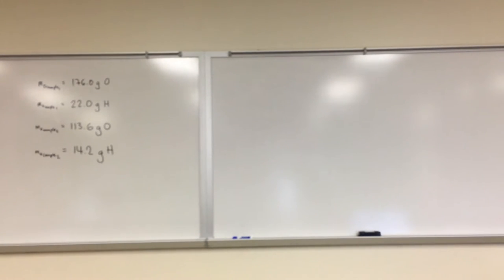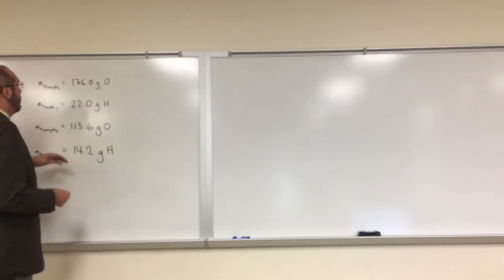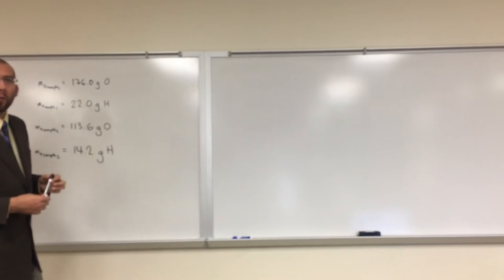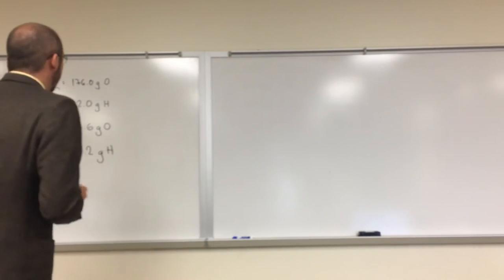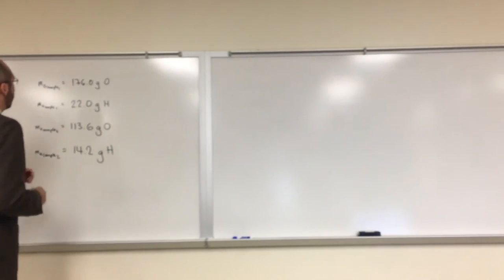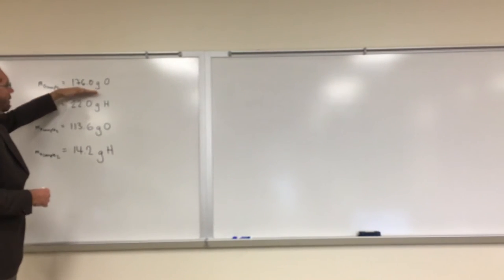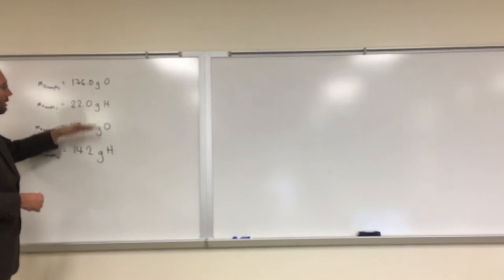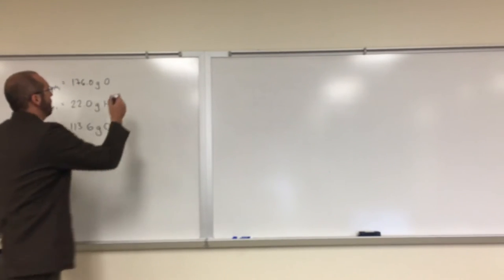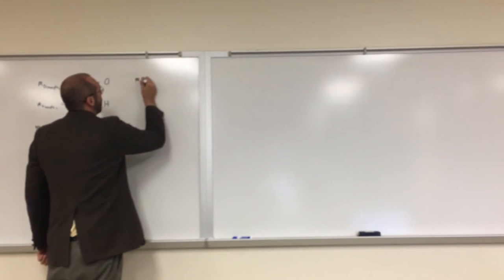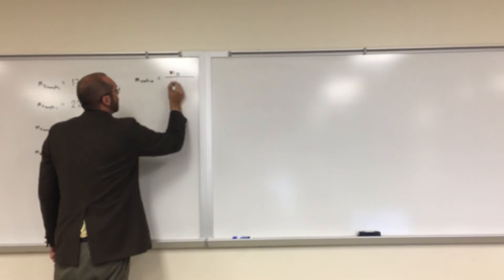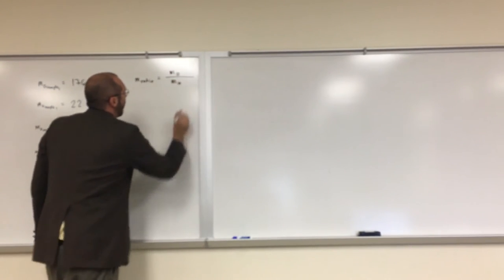Remember, for the law of constant composition, we want to use the mass ratio, and we want it to be a number that's bigger than one to make it easy for us to work with. If we're going to find the mass ratio, hopefully we see that oxygen in each sample is bigger than hydrogen. So when we do the mass ratio for water, it's going to be the mass of oxygen over the mass of hydrogen.